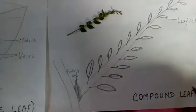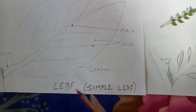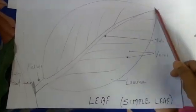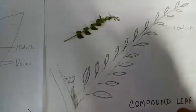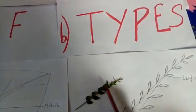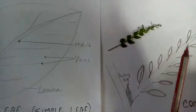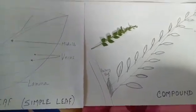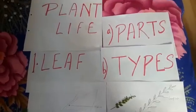Now you can tell the difference between a simple leaf and a compound leaf. In a simple leaf there are no leaflets, but in a compound leaf there are many leaflets. See this curry leaf I have brought — it is only one leaf, but it has so many leaflets. So broadly, leaves are classified into simple leaf and compound leaf. According to shape and margin there are many types; we will see those in our next video. Thank you.